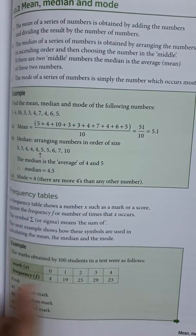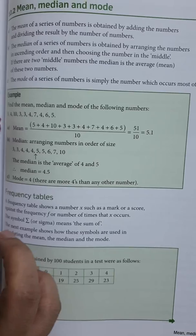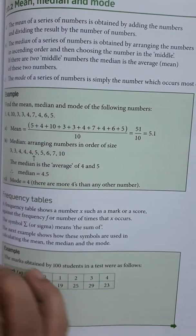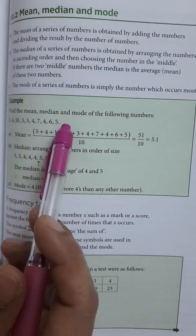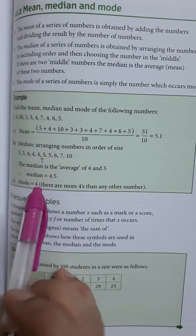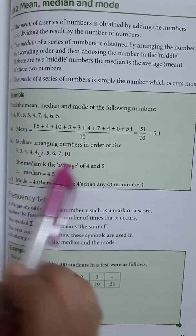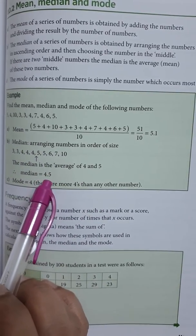For median, as I told you before, you have to arrange the numbers in an ascending order and then you have to choose. This series is having 10 count, it means it is an even series, so you will be getting two middle numbers, 4 and 5. Take the average of both of them. It will be 4.5, so this will be the median for this series.